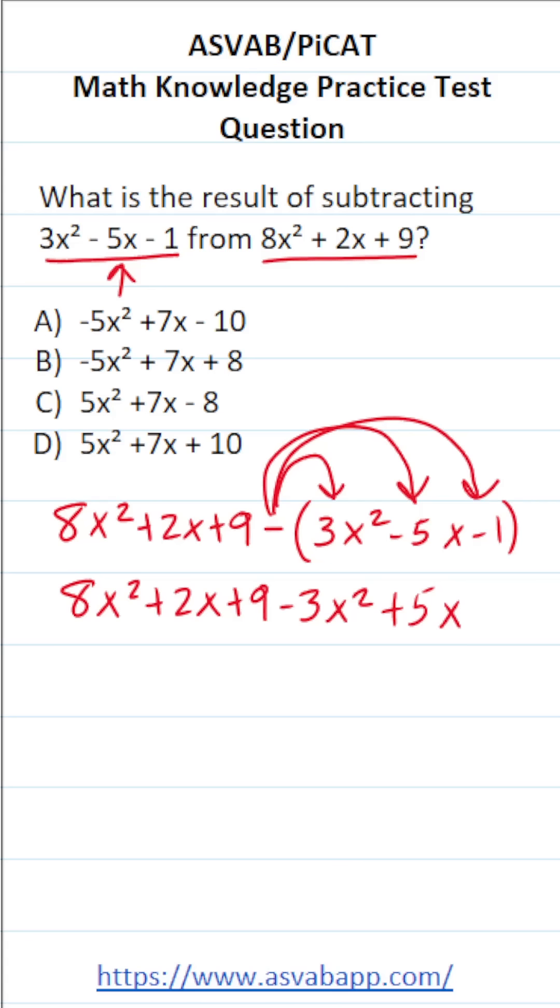And then finally, a negative times a negative is going to be a positive. So negative times negative 1 is going to be positive 1. Now all we have to do is simplify this expression by combining like terms.